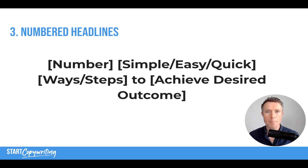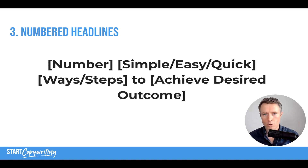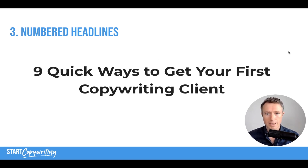Headline template number three is numbered headlines. I've already talked about the importance of using numbers. The template reads: '[Number] simple/quick/easy ways/steps/methods to achieve [desired outcome].' You would choose one adjective and one noun — you wouldn't use all of them. Then apply it to the outcome your audience is interested in. Here's a relevant example for everyone watching this video: 'Nine quick ways to get your first copywriting client.' That's going to appeal to beginner copywriters.